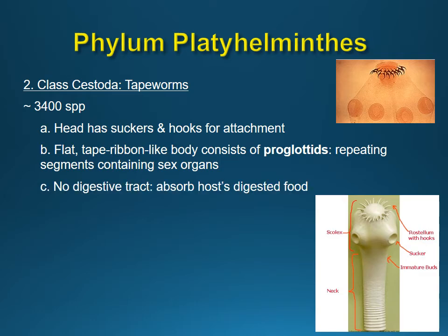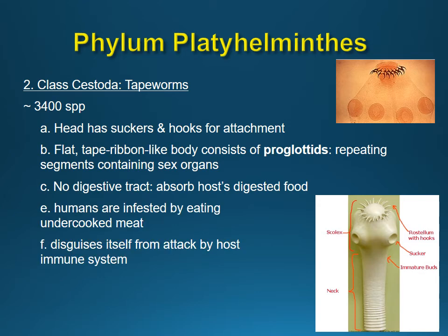Tapeworms have no digestive tract because they get all their food from the host. We usually get them by eating undercooked meat - especially pork, which is extremely common. It's important to make sure pork is cooked all the way. Beef can be the same deal, and fish - that's why sushi can be dicey. Friends eating blue rare steaks are taking a risk. Cook your food.